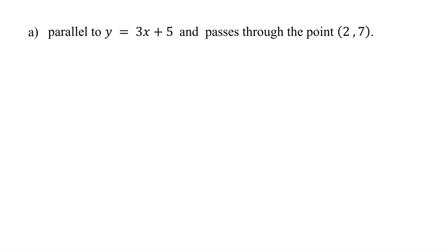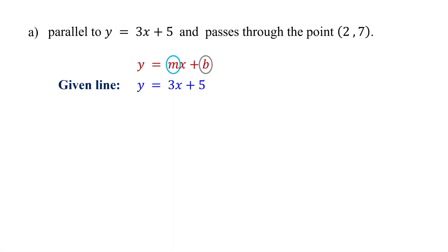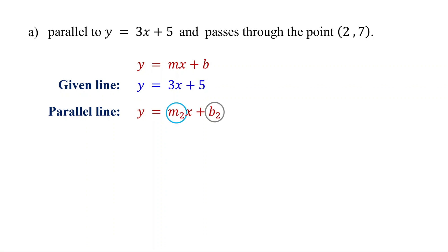In our first example, the equation of the given line is y equals 3x plus 5, which is written in slope-intercept form. In this form, m represents the slope and b represents the y-intercept. Let's represent the equation of the parallel line in slope-intercept form as y equals m2x plus b2, where m2 is the slope and b2 is the y-intercept of the parallel line. To write the equation of the parallel line, we need to find m2 and b2.